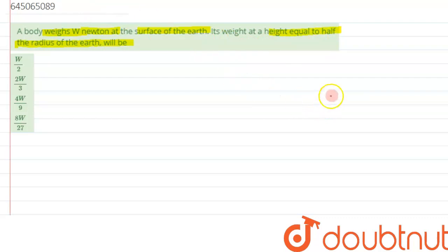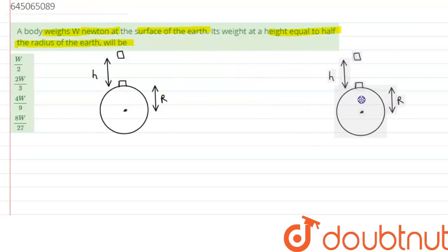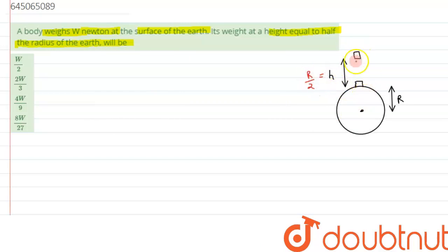Let's visualize the condition. As we can see, there is a body placed on the surface of the earth, and this body is taken to some height equal to half the radius of the earth. At this height, we are interested in finding its weight.